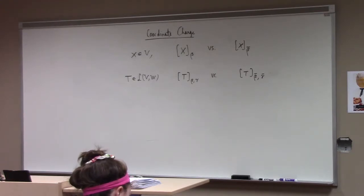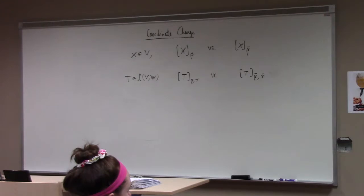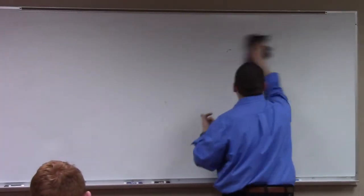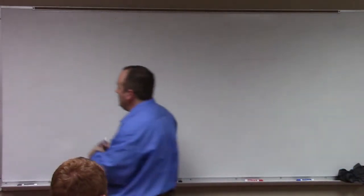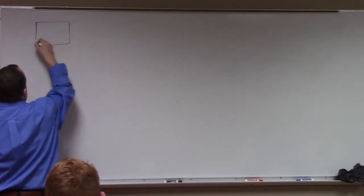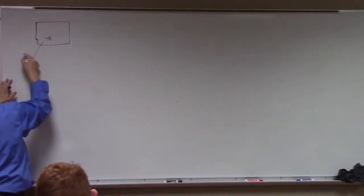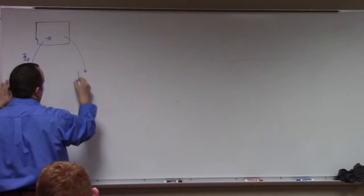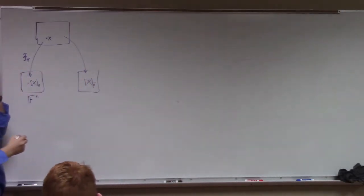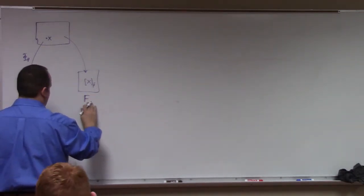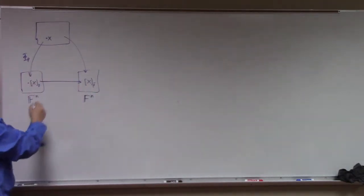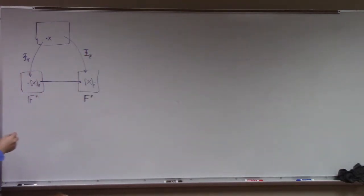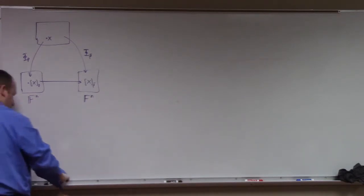As with everything else, if V and W are actually column vectors, there are the nicest formulas. If this is the vector space and here's x, then on one hand we have the φ_β coordinates giving us x_β, and on the other hand we calculate x_{β̄}. The question is how do we get from one to the other? We use φ_{β̄} composed with φ_β inverse — that composition is a map from column vectors to column vectors, so we can write it as matrix multiplication.